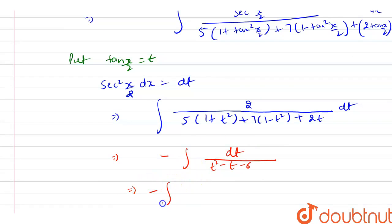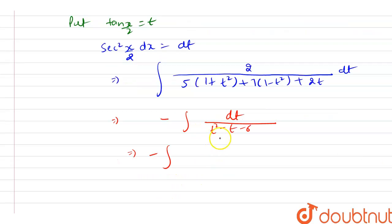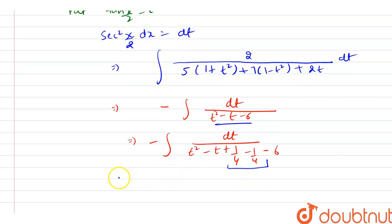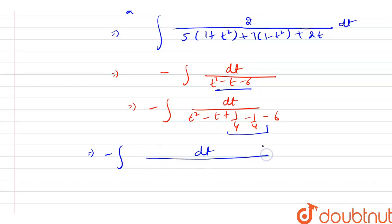From here, after solving further, we have minus of the integration of dt divided by [t² - t + 1/4 - 1/4 - 6]. We add and subtract 1/4 to complete the square in the denominator, which can then be written as (t - 1/2)² minus (5/2)².